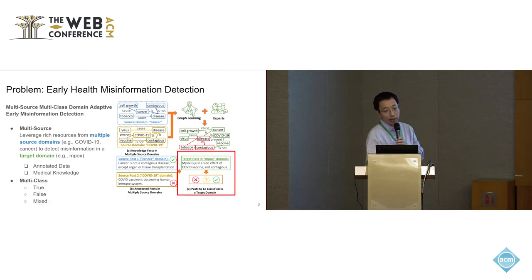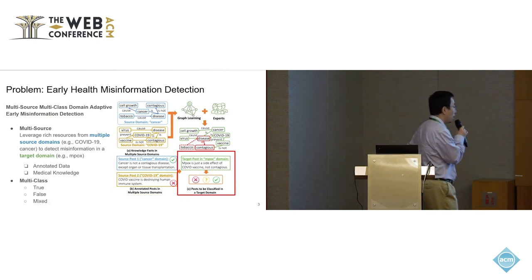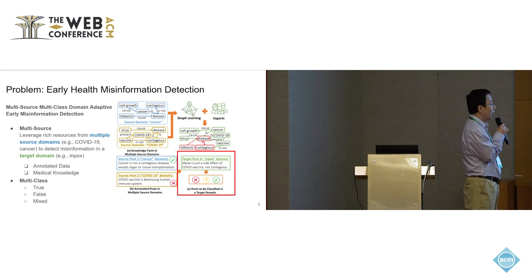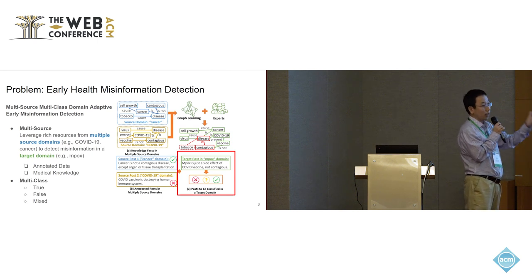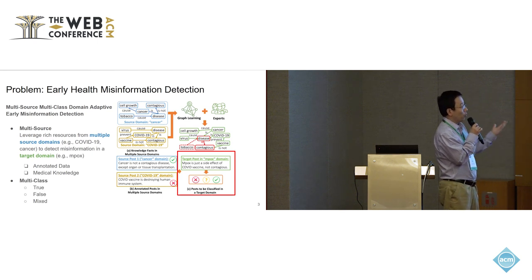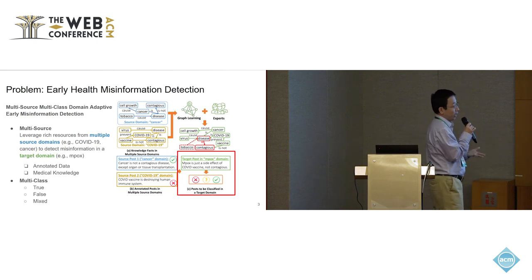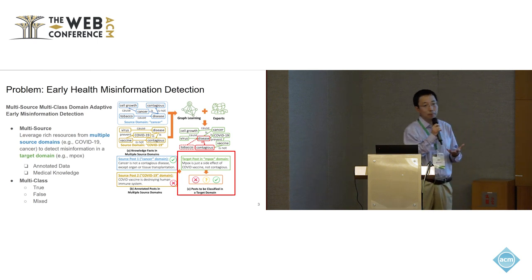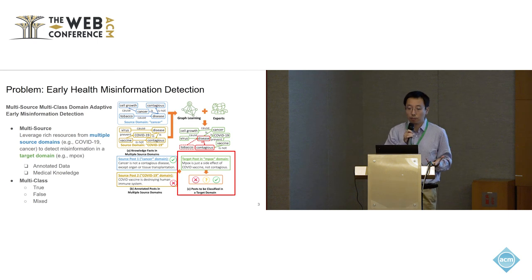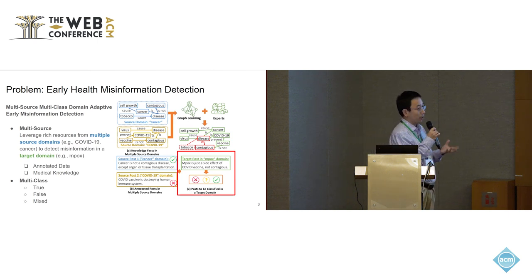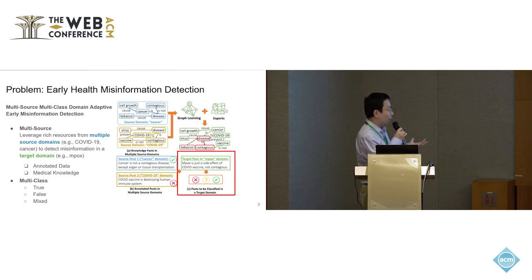The second aspect is about the multi-class nature of claims. This is motivated by the observation that a lot of claims on the web or social media are not simply true or false — some of them are mixed. Many current misinformation or fake news detection solutions make an oversimplified assumption by treating claims as either entirely true or entirely false.